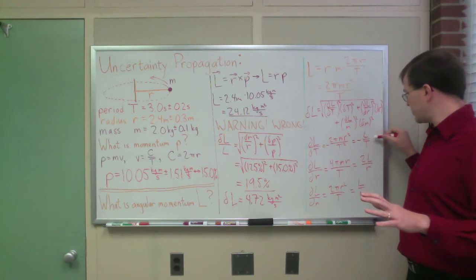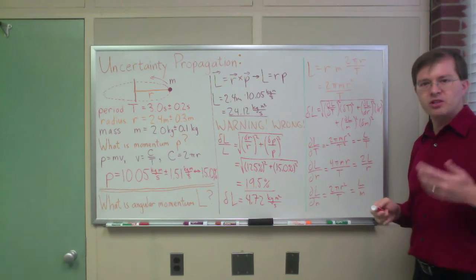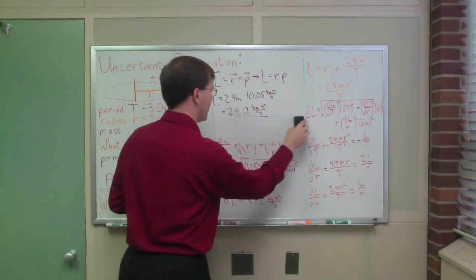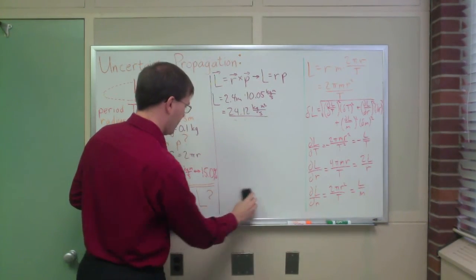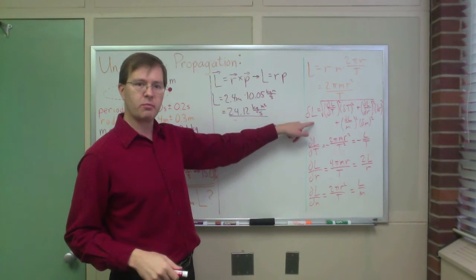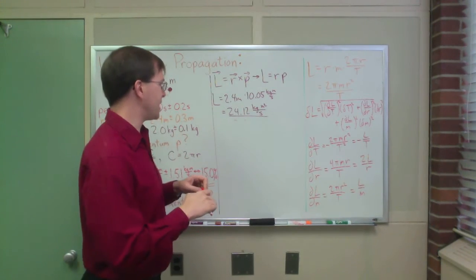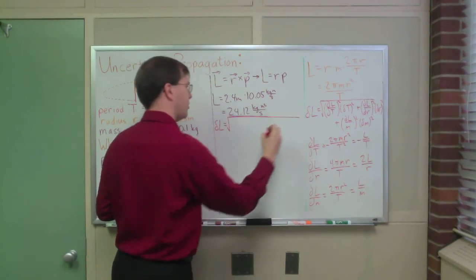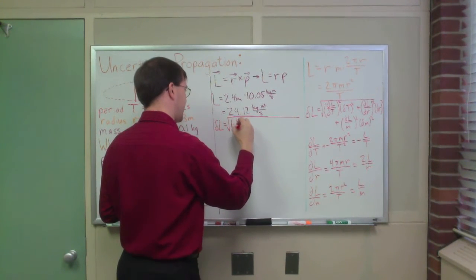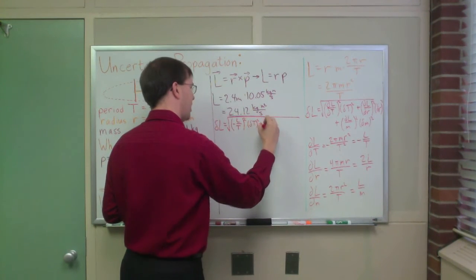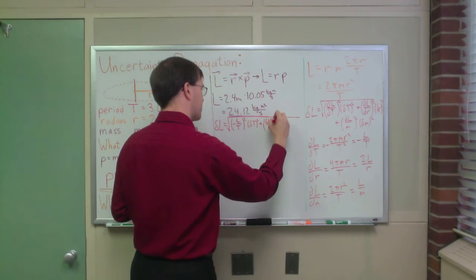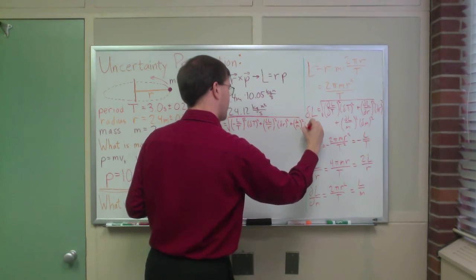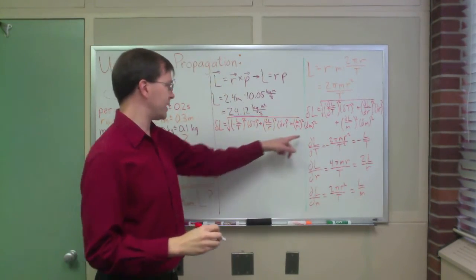I want to do this symbolically one more step. Plugging these partial derivative forms in terms of L into the quadrature equation, delta-L equals the square root of (−L/T)² times (delta-T)² plus (2L/R)² times (delta-R)² plus (L/M)² times (delta-M)². All these terms have an L² in them, so I can factor that out. This becomes L times the square root of the remaining terms.